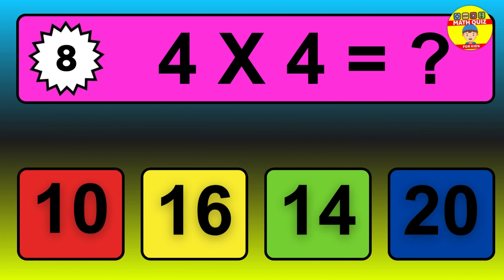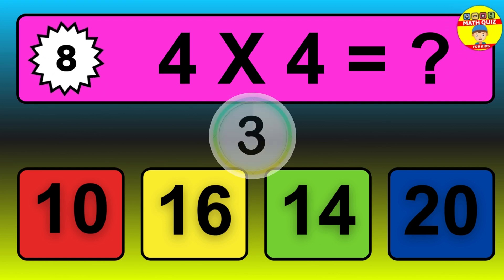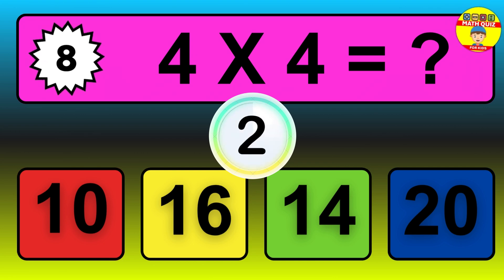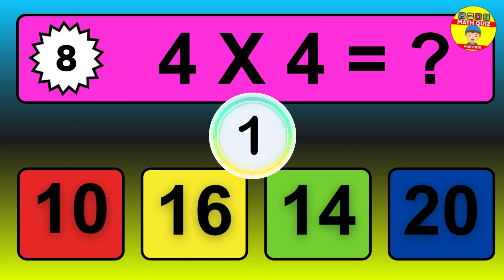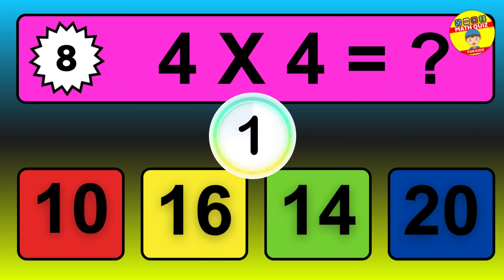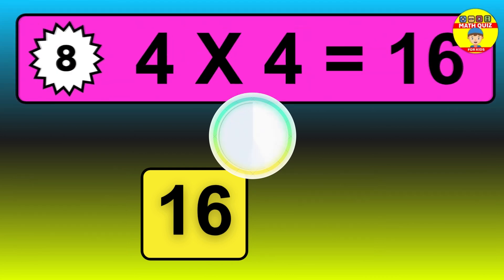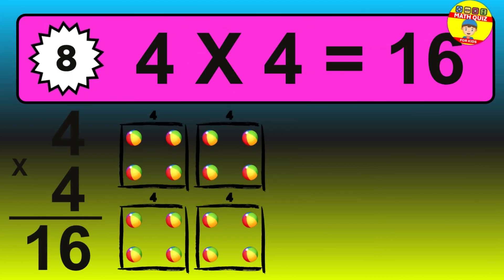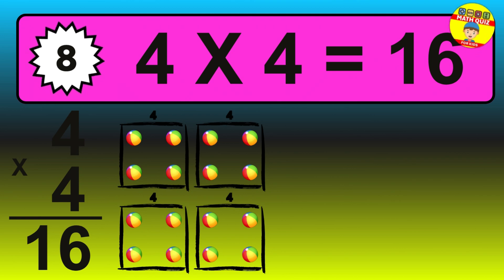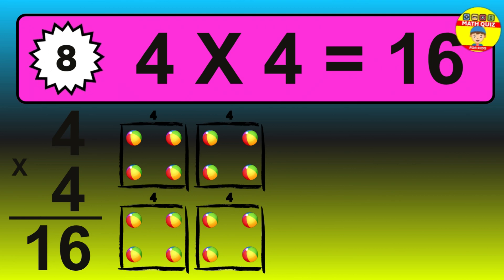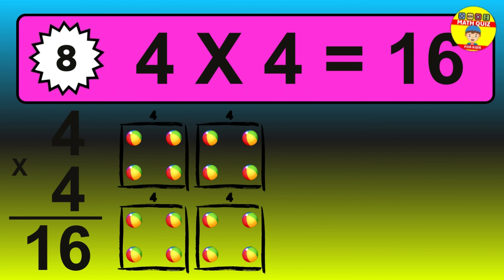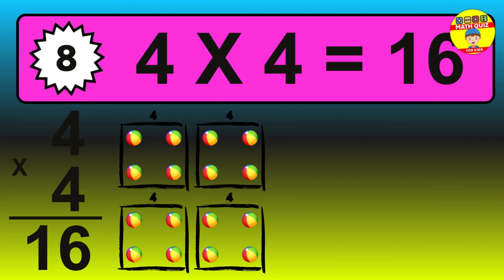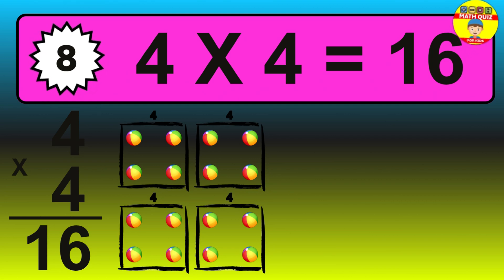Question 8. 4 times 4 equals what? The answer is 4 times 4 is 16. To calculate, we have 4 groups with 4 balls each one. So, how many balls do we have? 16 balls.